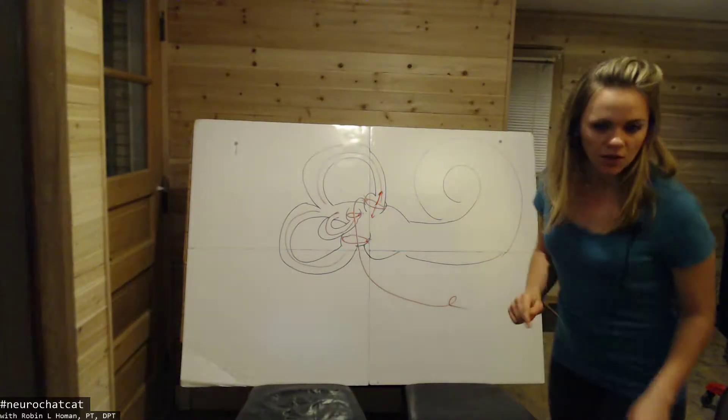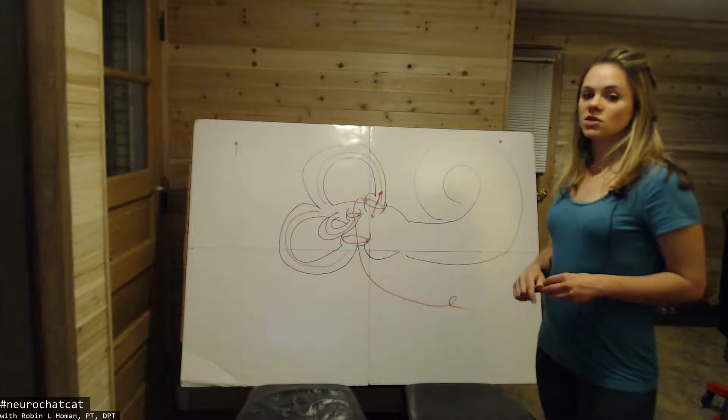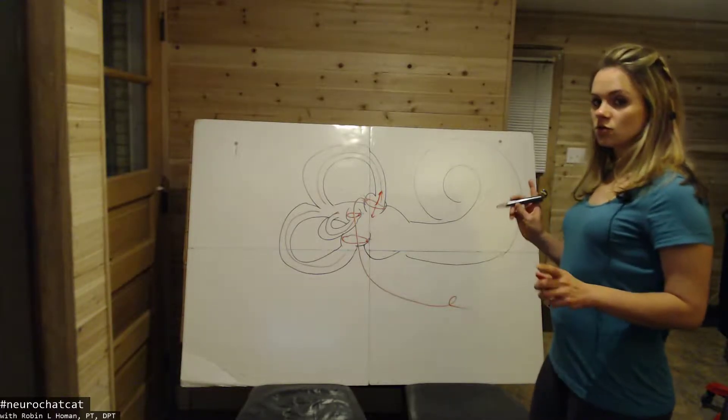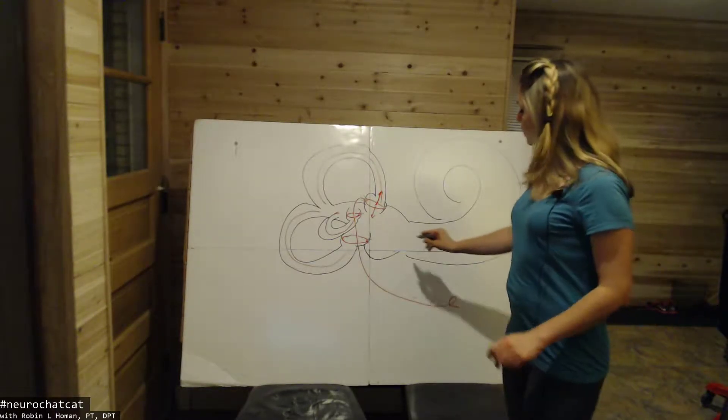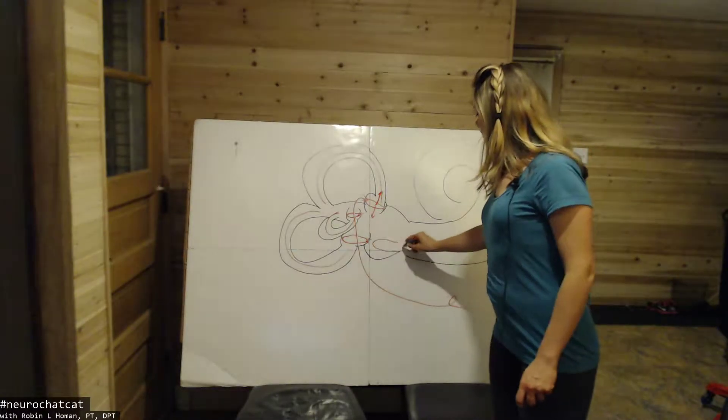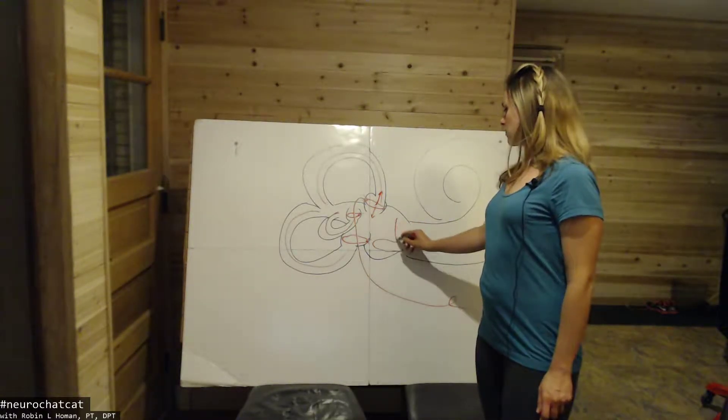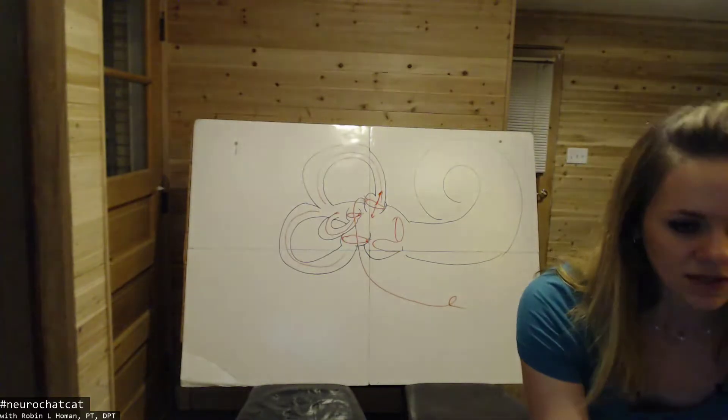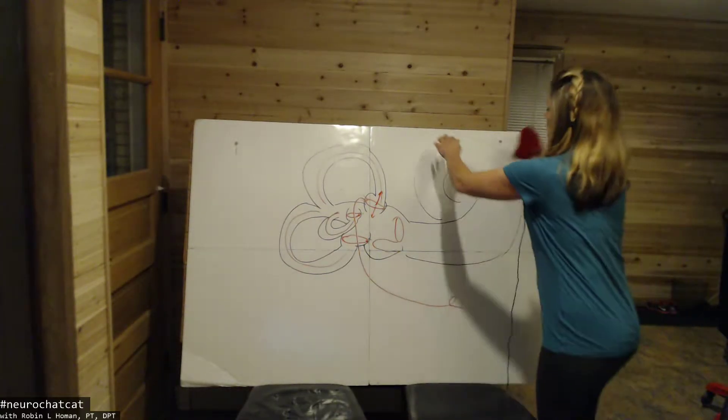All right, so going into linear velocity, we're going to talk about the otolith organs. So we have the utricle and the saccule. The utricle runs on the horizontal and the saccule and I need a little bit of space here to draw this, so goodbye cochlea.